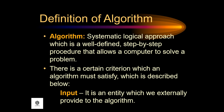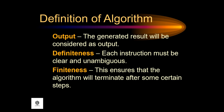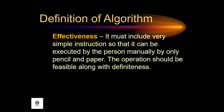First, input — it is an entity which we externally provide to the algorithm. Output — the generated result will be considered as output. Next is definiteness — each instruction must be clear and unambiguous. Finiteness — this ensures that the algorithm will terminate after some certain steps. And effectiveness — it must include very simple instructions so that it can be executed by a person manually with only pencil and paper; however, the operation should be feasible along with definiteness.